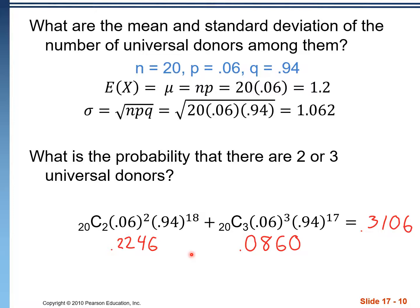There's a calculator function for this under distributions. Last time we used geometCDF; here we use binomPDF. We have to run it twice — once for two donors and once for three — then add the results manually. Parameters: 20 trials, 0.06 probability of success, and the specific number of successes. The result for two donors is 0.2246, and we'd add the result for three to get the final answer.